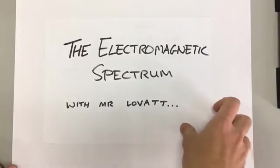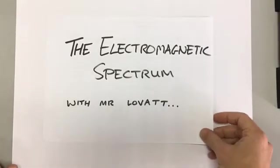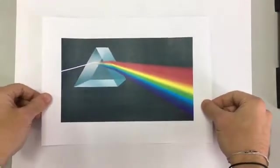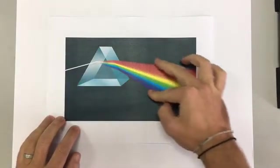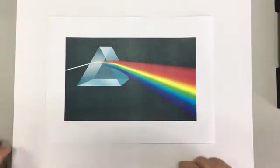This is a GCSE video on the electromagnetic spectrum. White light isn't just pure white light. It is made up of lots of different colored light. And if you've ever shone a light through a prism like this, you'll see that it separates out into lots of different colors.